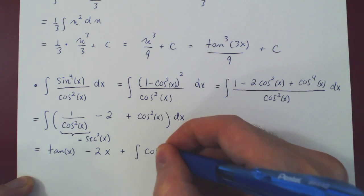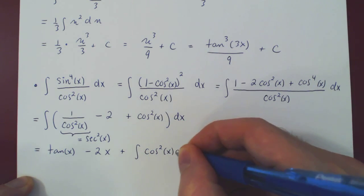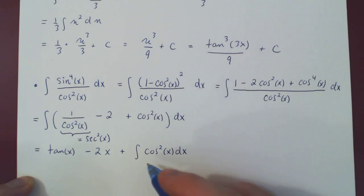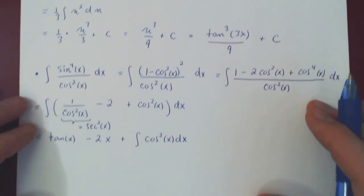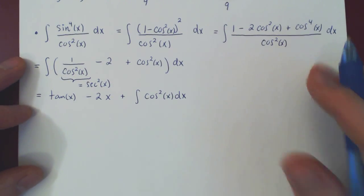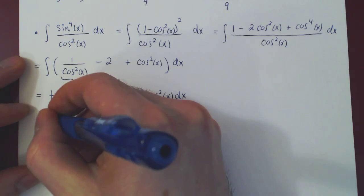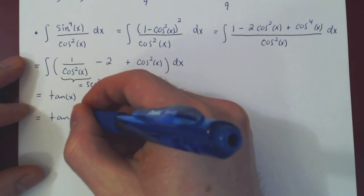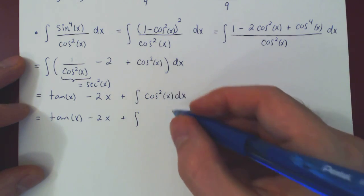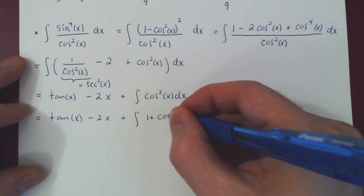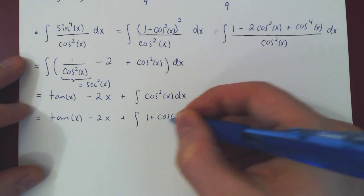The integral of minus 2 of course is minus 2x. Plus, and we're left with now the integral of cos squared of x dx. And now we recognize this of course as a problem where we have to apply the half angle formula. An integral involving a single cosine with a single even power. And so with the half angle formula, we're going to be done.